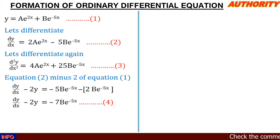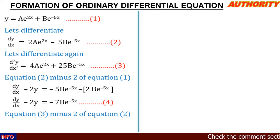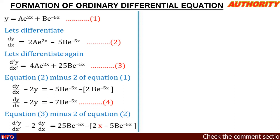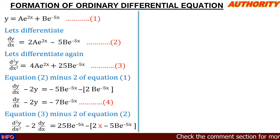Now what if we compute equation 3 minus 2 times equation 2? Repeating the same procedure, we have d²y/dx² minus 2 times dy/dx. When we multiply 2ae^(2x) by 2 we get 4ae^(2x), which subtracted from 4ae^(2x) in equation 3 gives 0.